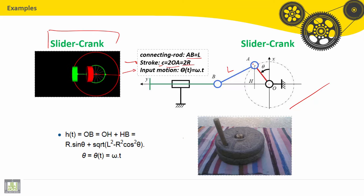As an input motion, it is theta. This is theta, the rotation of the crank. It is assumed to be omega T, or WT. We want to have information about H(T).